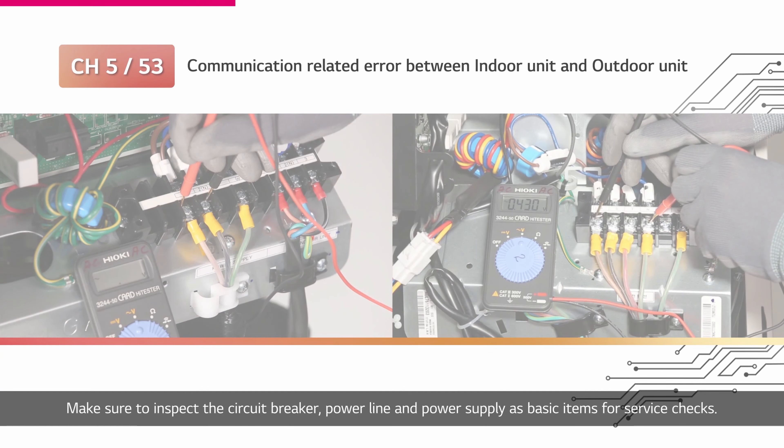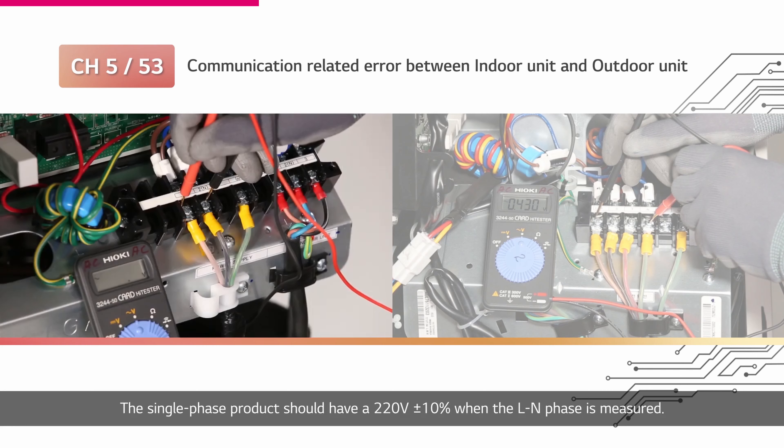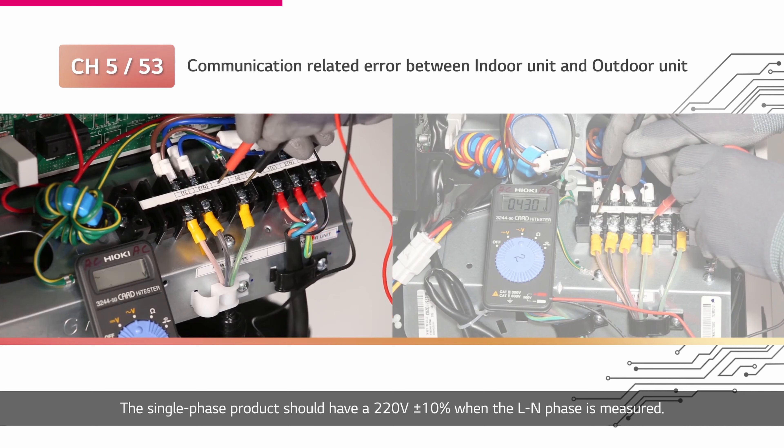Make sure to inspect the circuit breaker, power line, and power supply as basic items for service checks. The single phase product should have 220V plus minus 10% when the LN phase is measured.